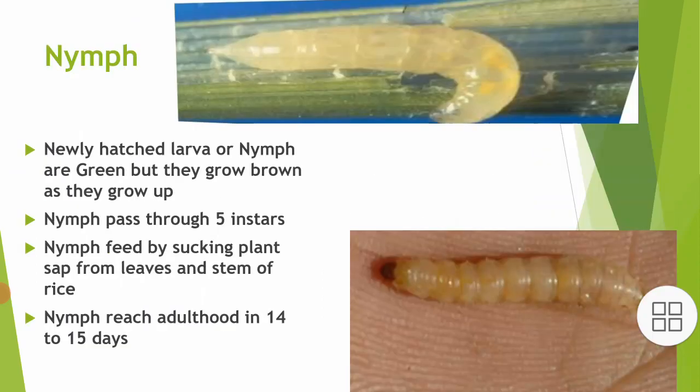Nymph: Newly hatched larvae or nymphs are green, but they turn brown as they grow up. Nymphs pass through five instars. Nymphs feed by sucking plant sap from leaves and stem of rice. Nymphs reach adulthood in 14–15 days.